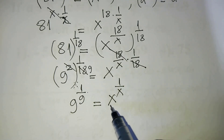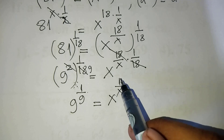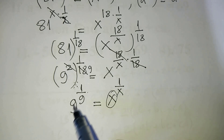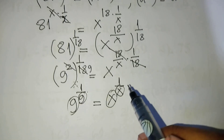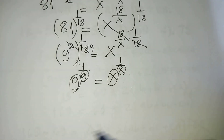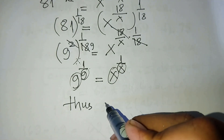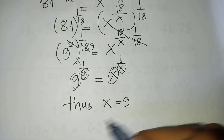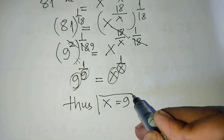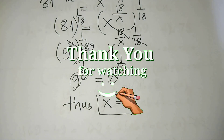Looking at our equation, we have 9^(1/9) = a^(1/8). Since the base is 9 and the exponents match when a = 9, we get a = 9 as our answer. Thank you for watching — if you like my videos please don't forget to subscribe to my channel for more exciting videos. Goodbye, see you in the next video!